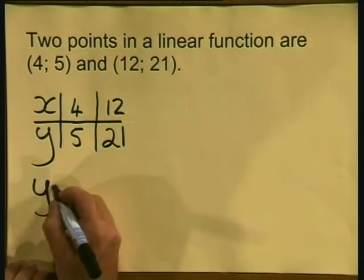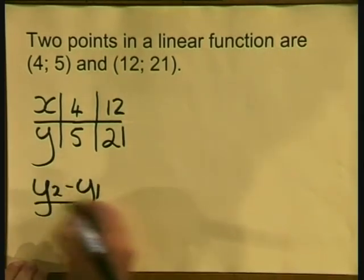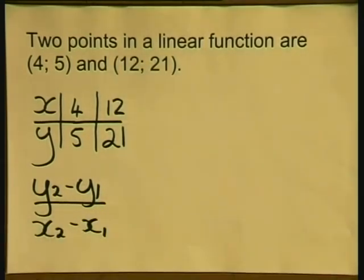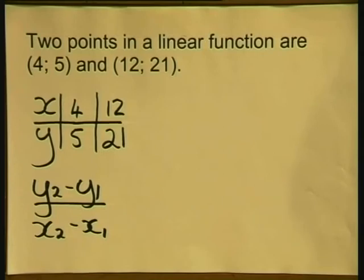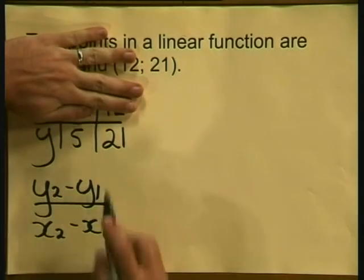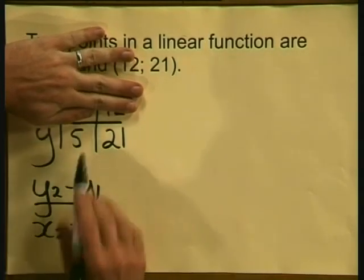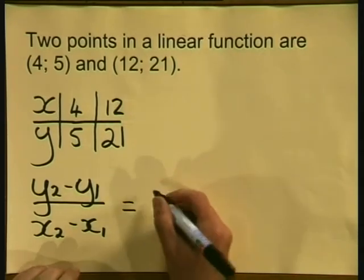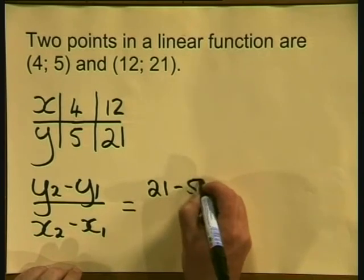Now we know that y2 minus y1 divided by x2 minus x1 is what we need to calculate. So the formula says subtract the y's. So for the y's we have 21 minus 5. So the top of our ratio, the numerator, we'll write as 21 minus 5.